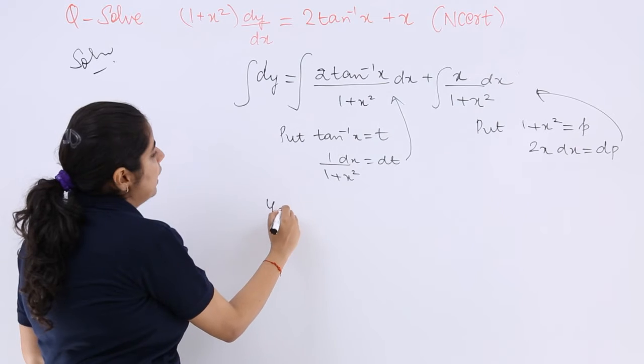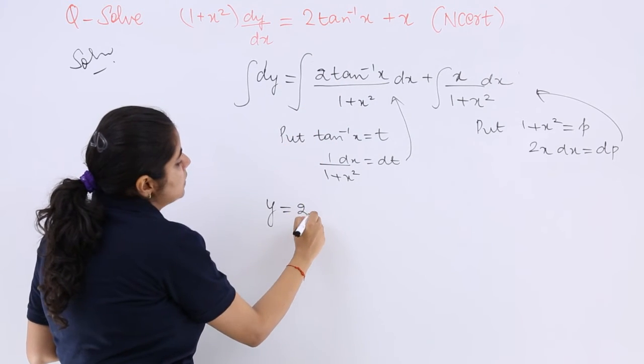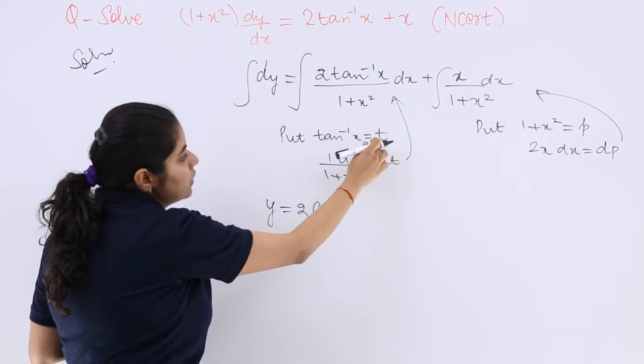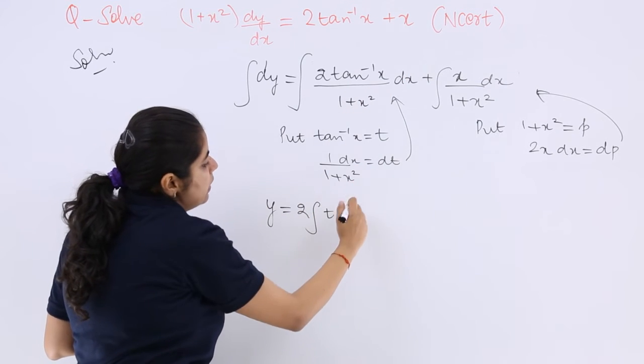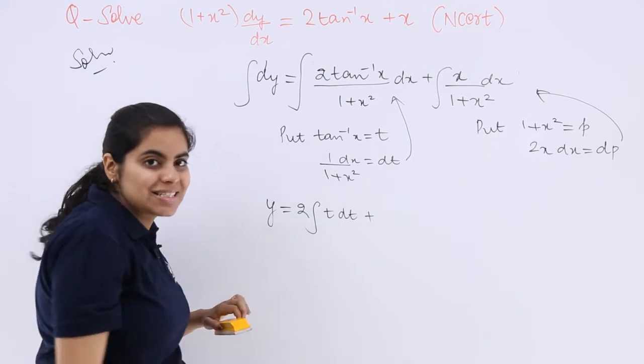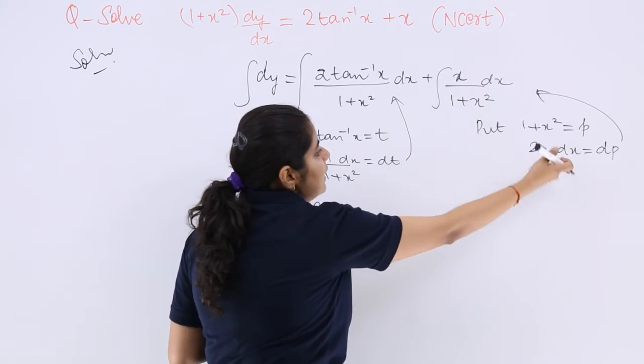Now let me put these values. So here it becomes y and this is 2 coming outside. Integration tan⁻¹x is t, dx/(1+x²) is dt.